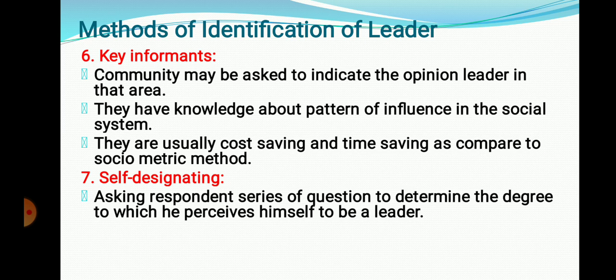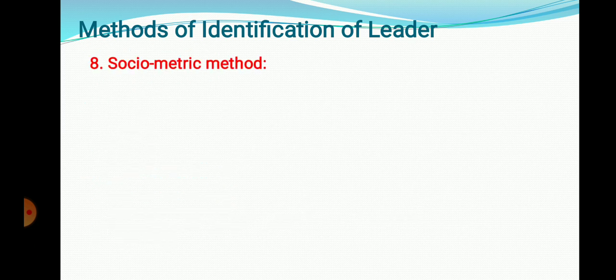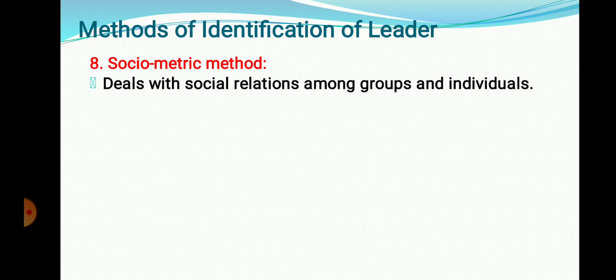The seventh method is Self-Designating. This method involves asking a series of questions to determine the degree to which a person considers himself a leader. By answering questions — whether he is able to make decisions, coordinate among people — the person can assess himself and determine whether he is capable of becoming a leader of that group.